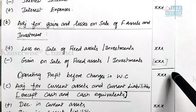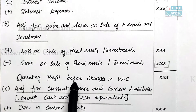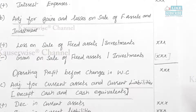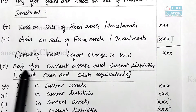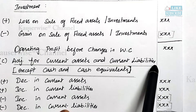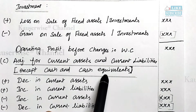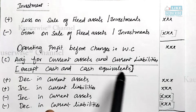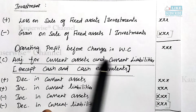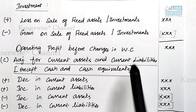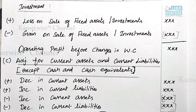After doing the two adjustments, the amount you get is called operating profit before changes in working capital. Then we have to do the third adjustment: adjustment for current assets and current liabilities, except cash and cash equivalents. I will tell you what the items of cash equivalent are while we do the problem.